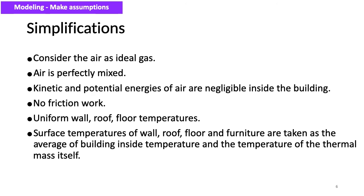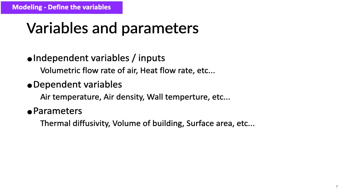In the model you can find independent variables or inputs, dependent variables, and parameters. The two dependent variables we are interested in are air density and air temperature. Inputs to the model are volumetric flow rate of air, heat flow rate, solar irradiation, and so on. Parameters include thermal diffusivity, volume of building, surface area, and others, which we will discuss further at the development stage.